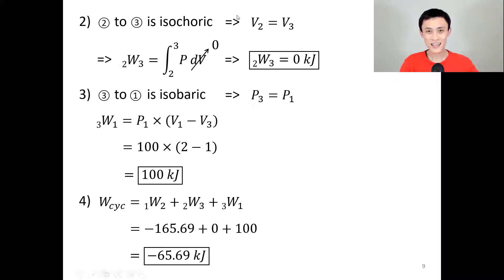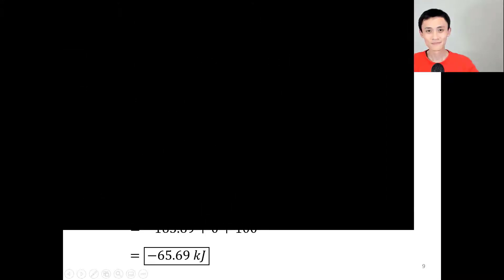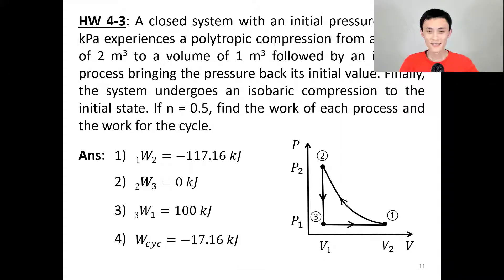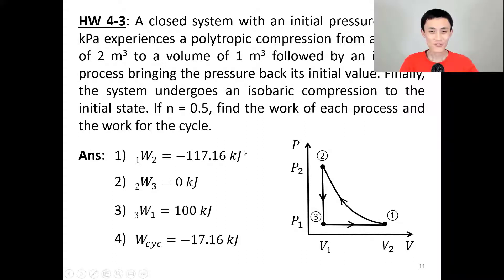The work of the whole cycle is the sum of work from each process, which gives a negative overall value — consistent with a counterclockwise cycle. There is also an exercise very similar to this example with initial pressure still 100 kPa. Try to practice it on your own; all the solutions are provided.